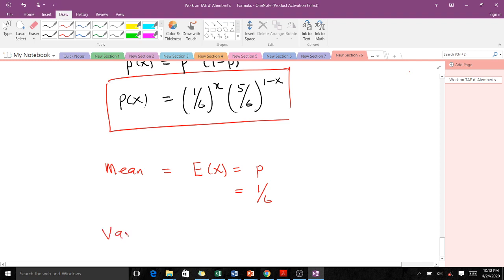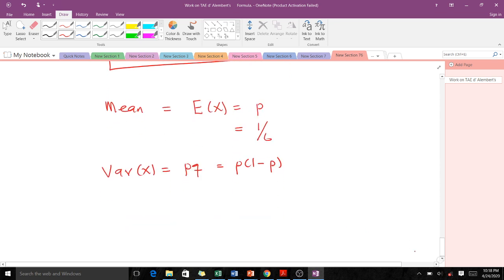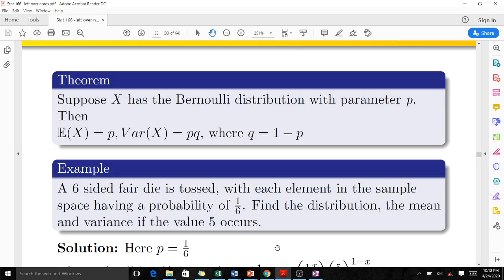Next we're supposed to find our variance. The variance of X is given as p times q, where q is 1 minus p. This gives us 1/6 times 5/6, which equals 5/36.